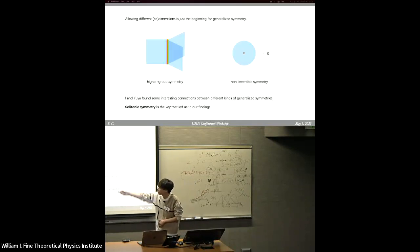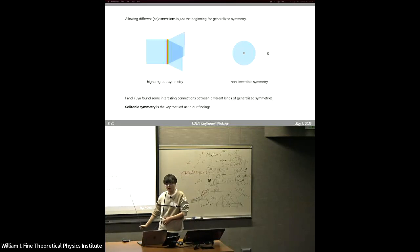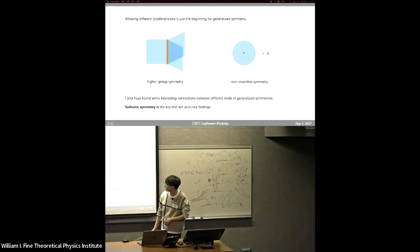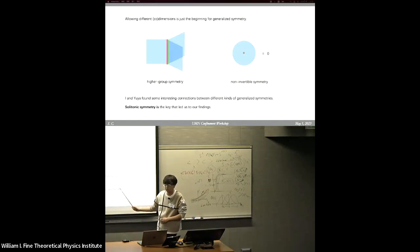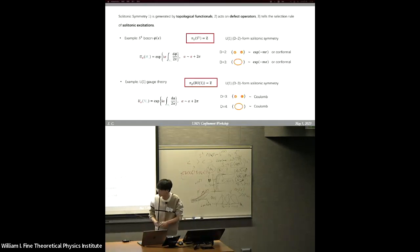Since we already know that higher form symmetry is important enough to constrain infrared physics, this is also the case for higher group symmetry and non-invertible symmetry. People found many examples with higher group symmetry or non-invertible symmetry and used them to constrain infrared physics to find interesting phenomena. This is the background. In this talk, I and Yuya found some interesting connections between different kinds of generalized symmetries, and here I will give an introduction to our findings.